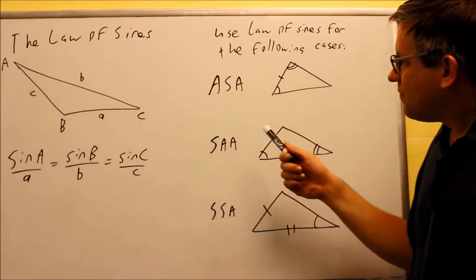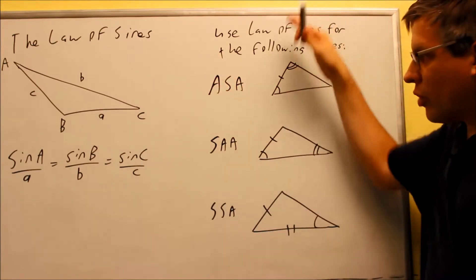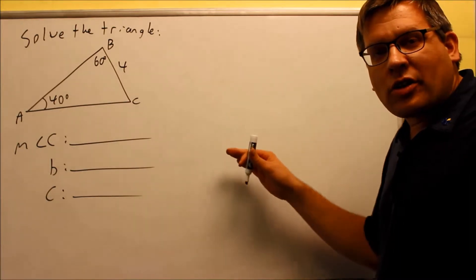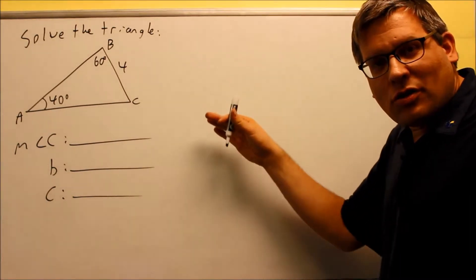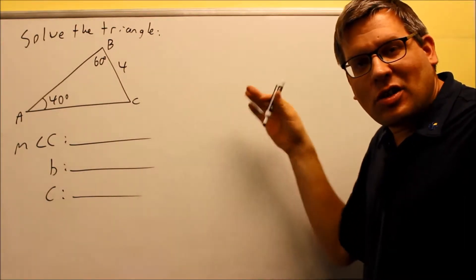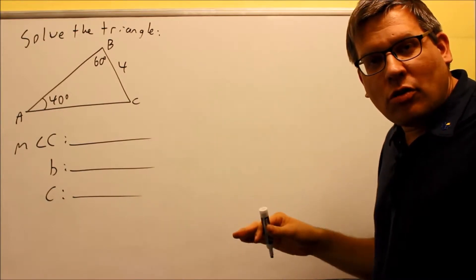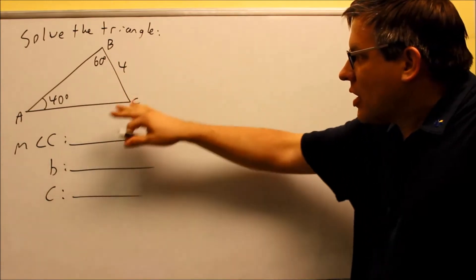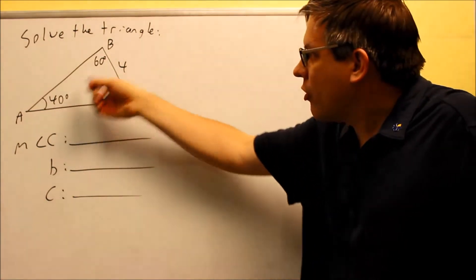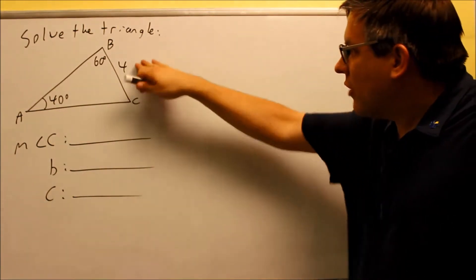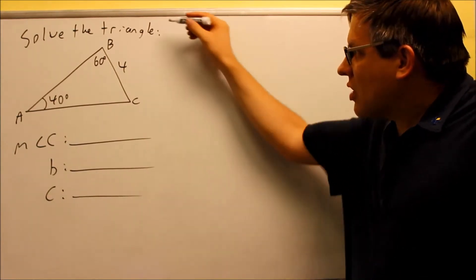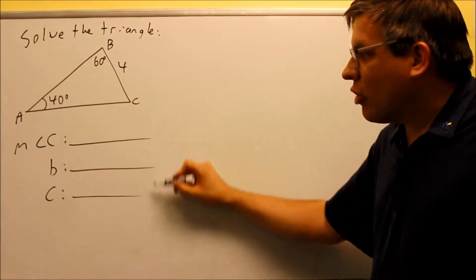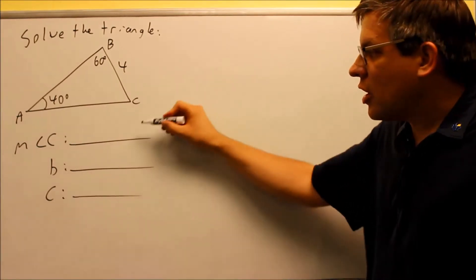Now that we've looked at what the Law of Sines is and when you can use it, we'll jump into an example. Here is a given triangle: we have 40 degrees, 60 degrees is given to us, and side BC is 4. It says solve the triangle, which means you want to find all the missing sides and angles — those would be angle C, side B, and side C — and we're going to use the Law of Sines to do that.